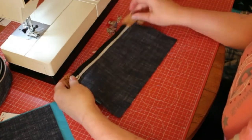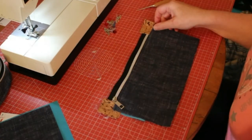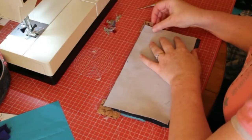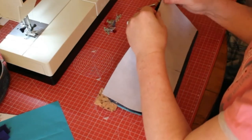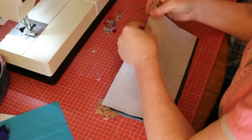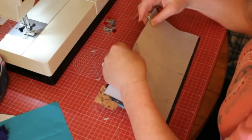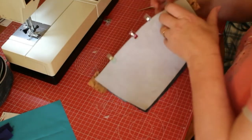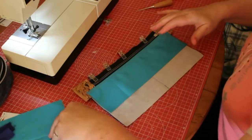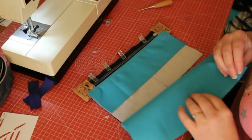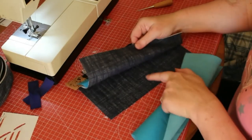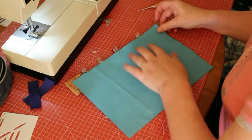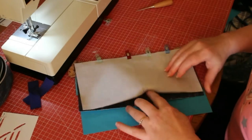That's it topstitched. For the other side, do the same again. Place the outer fabric right sides together and clip that first. Take a piece of waterproof canvas, put it right side down, and sandwich the zip between the two pieces of fabric.